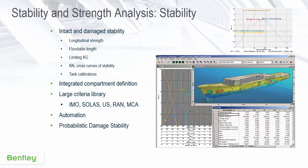For stability and strength analysis, a full range of intact and damaged stability, as well as ancillary analysis methods like longitudinal strength and limiting KG, can be combined with a broad portfolio of stability criteria in the library. An integrated compartmentation editor lets you model the vessel's compartments, and an automation capability lets you automate repetitive tasks. Advanced analysis is also available in the form of probabilistic damage stability.